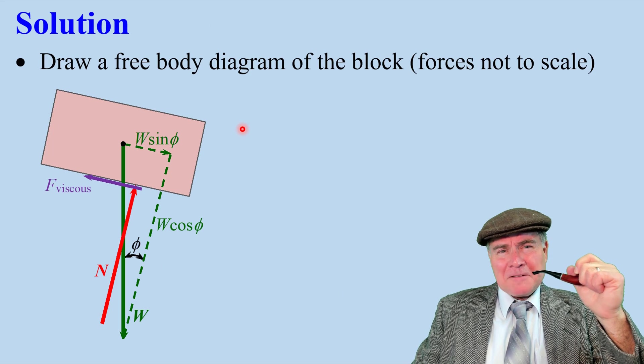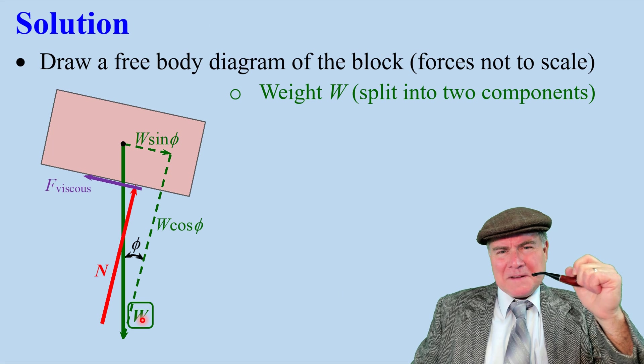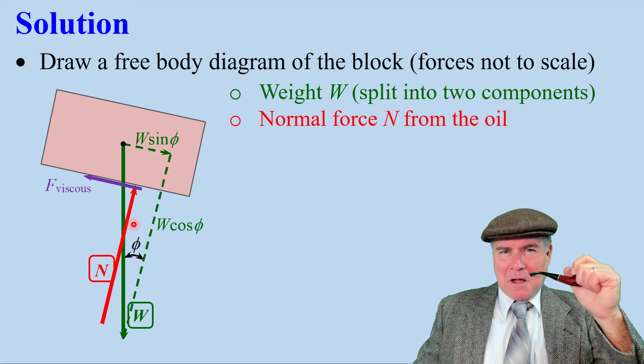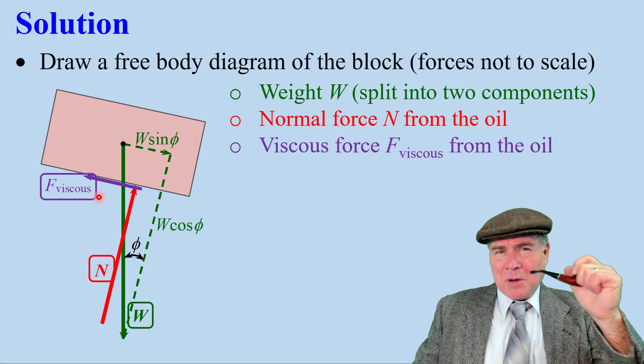To solve, we draw a free-body diagram of the block. There's a weight W, which we split into two components. There's a normal force N from the oil acting on the block. Then there's a viscous force trying to slow down the block.